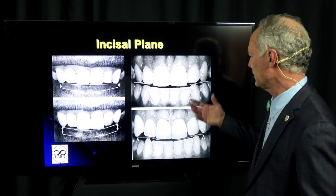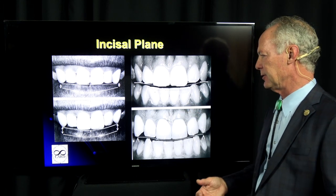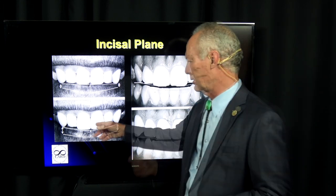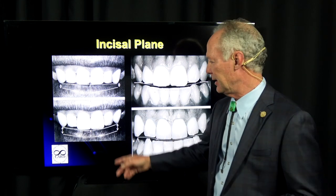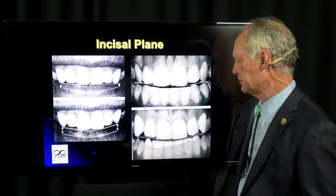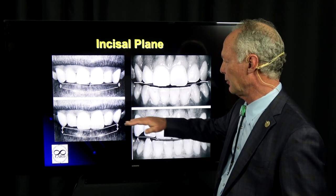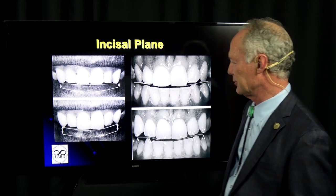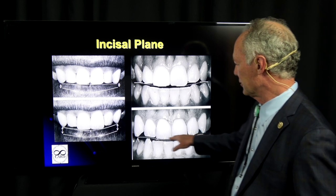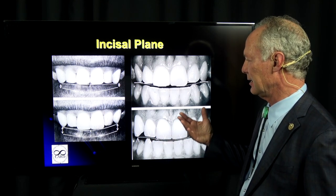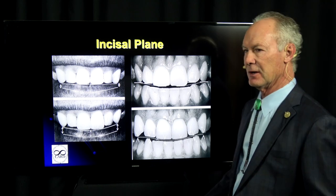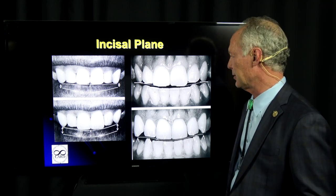The central incisors should always be the longest teeth. It's considered a very youthful look if the central incisors are significantly longer than the lateral incisors, because over time people tend to wear off their central incisors. If people grind their teeth at night without a night guard, many times you'll see all anterior teeth being the same length, but that's not the natural state and not what you'd see in a younger person.